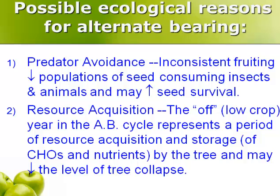Now I'd like to talk about the possible ecological reasons for alternate bearing. First, predator avoidance: inconsistent fruiting decreases populations of seed-consuming insects and animals and may increase seed survival. Another possible reason is resource acquisition — the off or low crop year represents a period of resource acquisition and storage of carbohydrates and nutrients by the tree, which may decrease the level of tree collapse and increase the life of the tree.